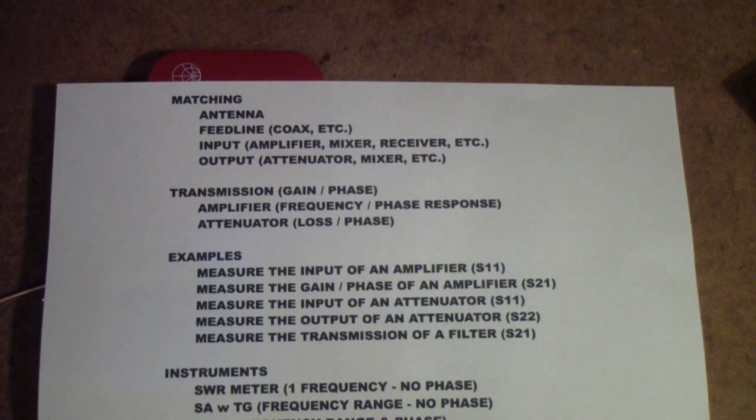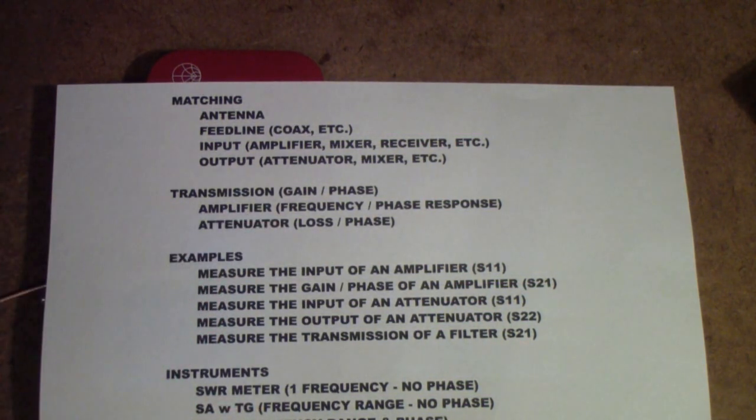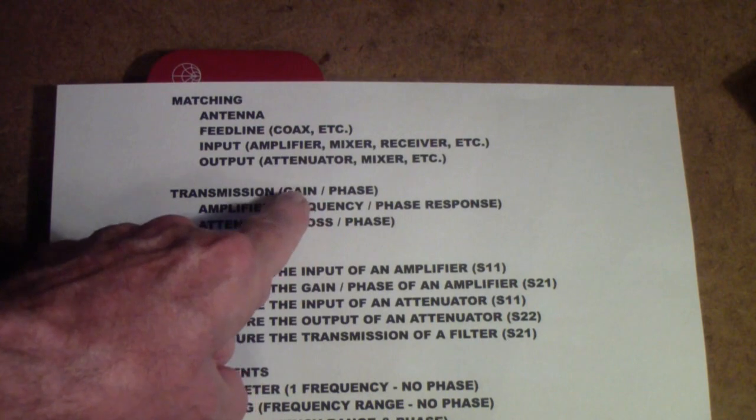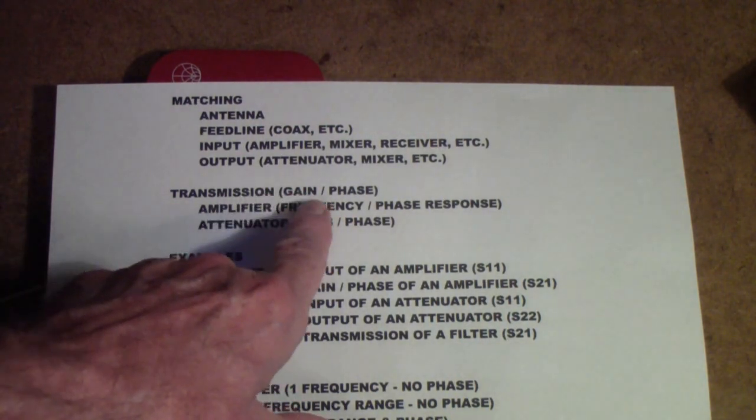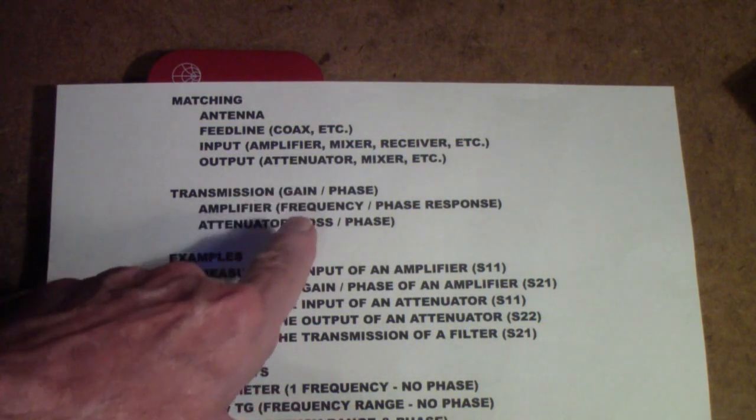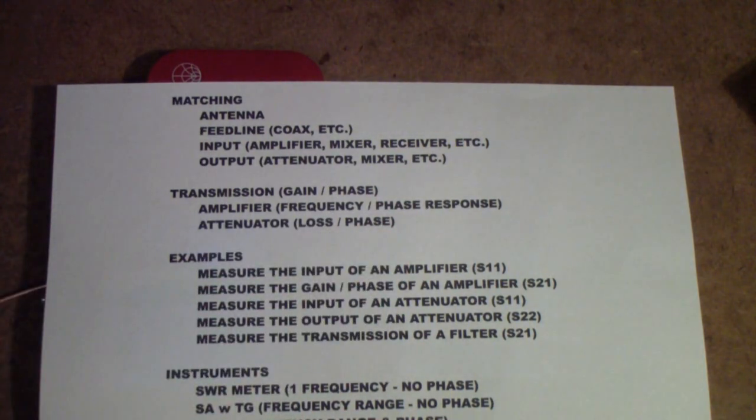Instead, you're interested in an input and an output, and you'd like to know both gain and phase information. Phase information is very important. The spectrum analyzer I showed you a minute ago does not give you phase information, and that is why it is not called a vector network analyzer. You could call it a scalar network analyzer because it can measure gain, it can measure the magnitude of the impedance, but it cannot measure the phase of an impedance.